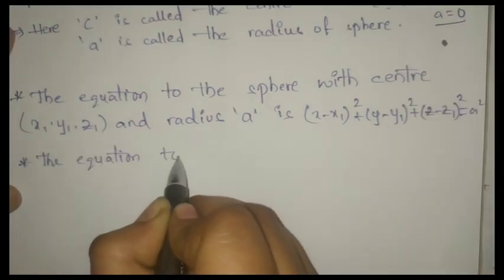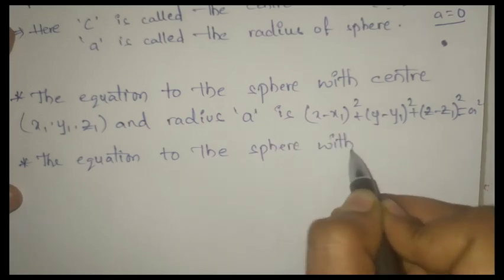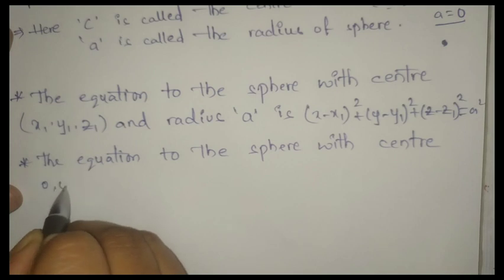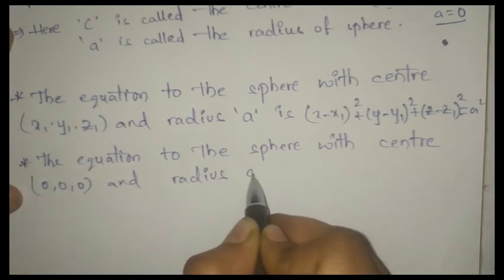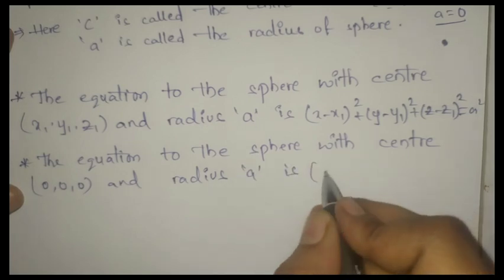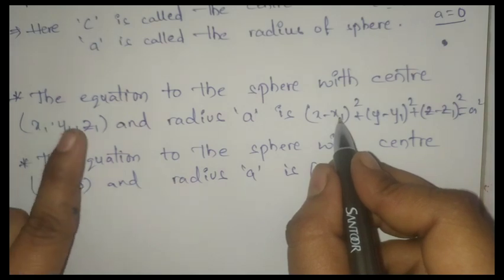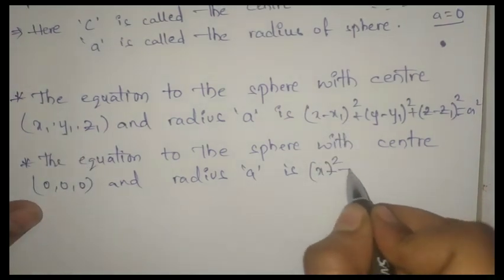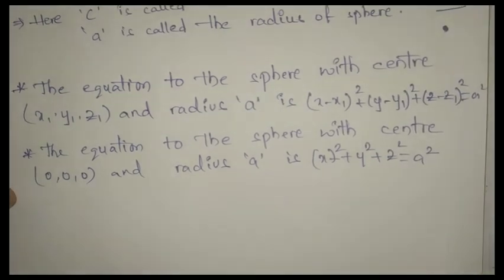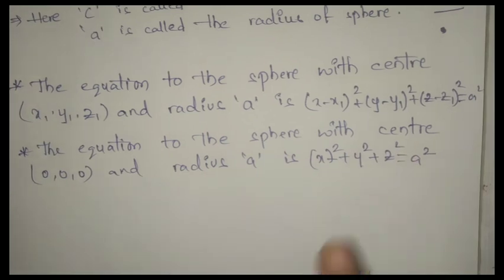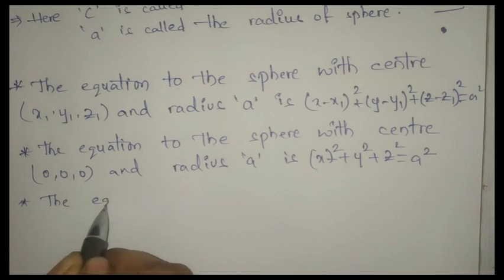One more formula: the equation of the sphere with center at the origin (0, 0, 0) and radius 'a'. Substituting x1 = y1 = z1 = 0, we get: x² + y² + z² = a². This is the equation of the sphere with center (0, 0, 0) and radius a.